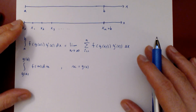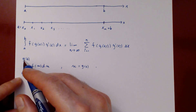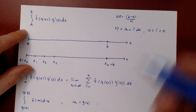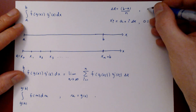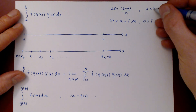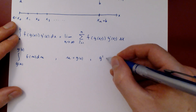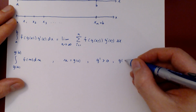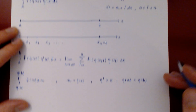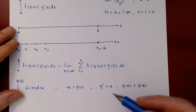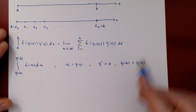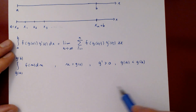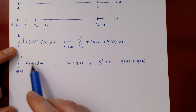For simplicity, we assume the first derivative of g is positive, meaning g(a) < g(b) when a < b. If g had a negative derivative, g would be decreasing and g(a) > g(b), which would flip the bounds of integration. The argument works the same either way, but for simplicity we assume a < b and g is increasing.